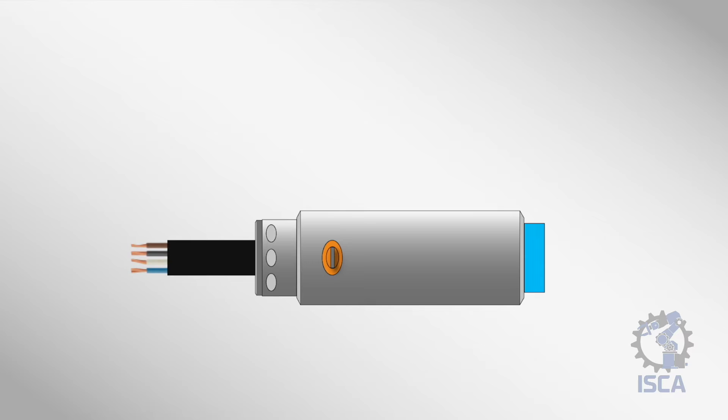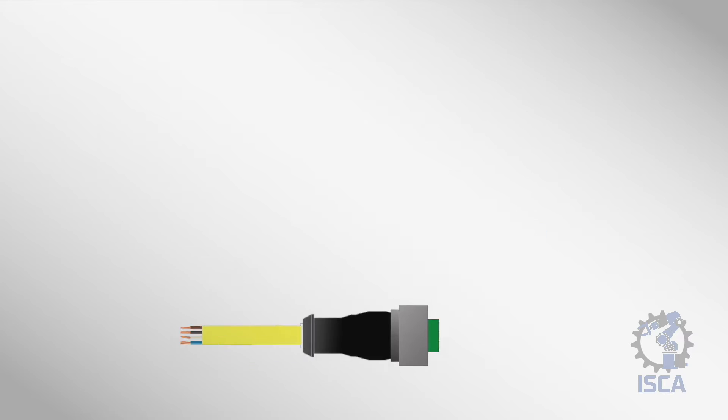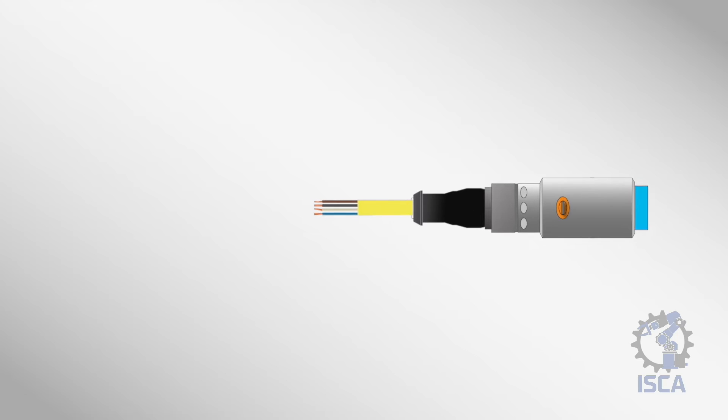Capacitive proximity sensors typically have a cable for connecting power and outputs. This cable may be permanently attached or use a removable connector that screws into the sensor housing. Inside this cable, there are four wires: brown, blue, black, and white.